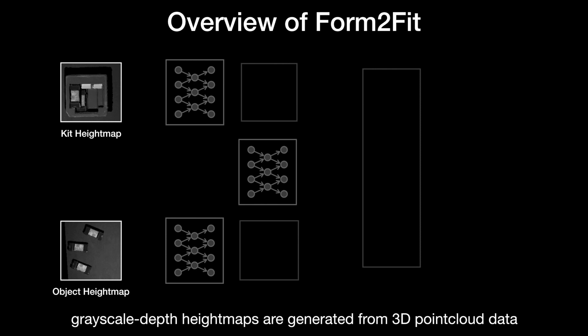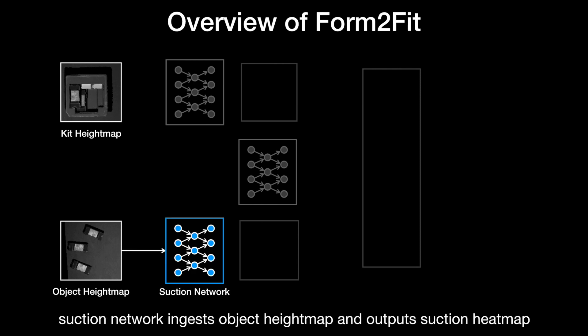The object height map is fed to a suction module, which is a fully convolutional ResNet to generate pixel-wise predictions of suction success. Here, the suction probability map is visualized as a heat map, where hotter pixels indicate better locations to execute the suction primitive at the 3D surface location of the corresponding pixel.